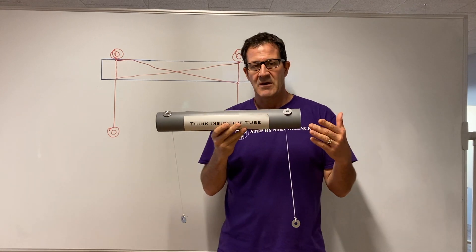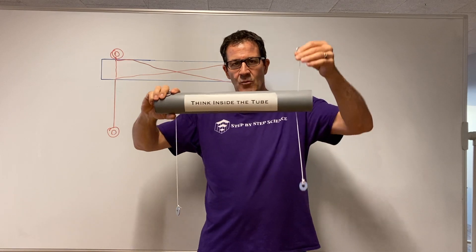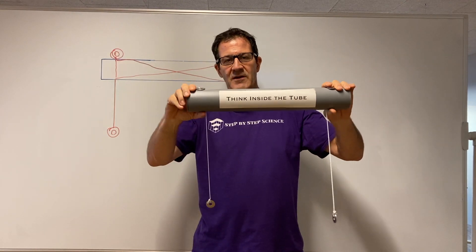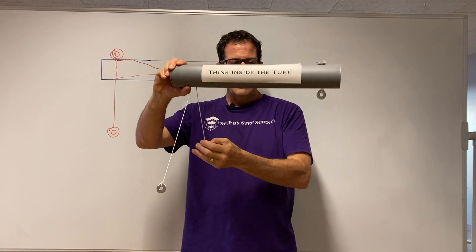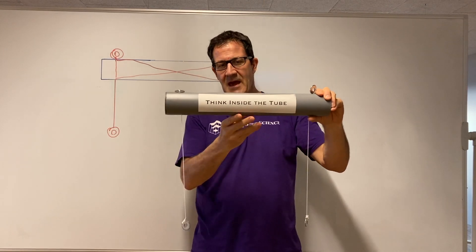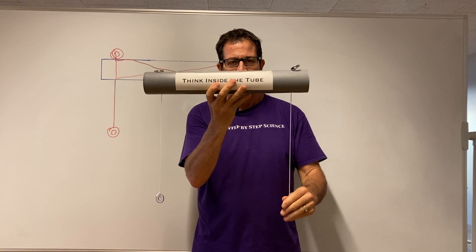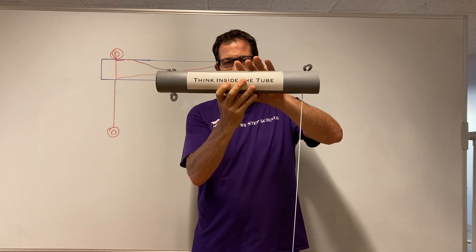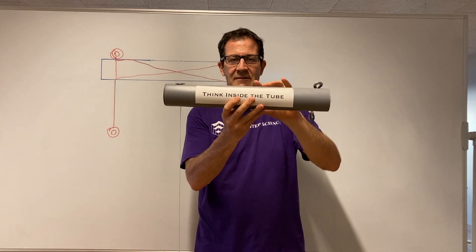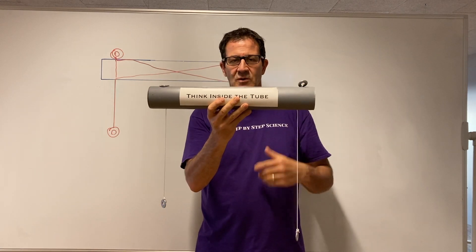Now we're going to go into experiment number three. Before I do experiment number three, let me quickly review one and two. For number one, I pull this and this goes up, pull this and that one goes up. For number two, same on the other side. Now for experiment number three, I simply hold the tube in the middle and I pull this one down and the one on the other side goes up. This usually freaks students out a little bit because now they're really going to have a hard time coming up with an explanation. So that was all three experiments: number one, number two, and number three.